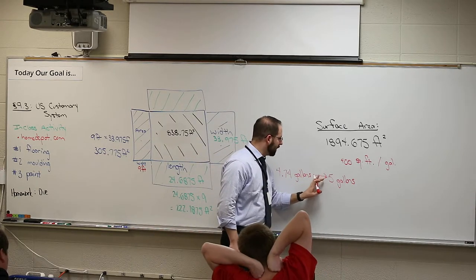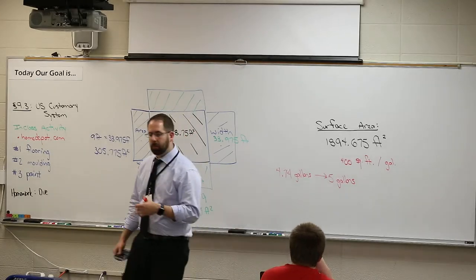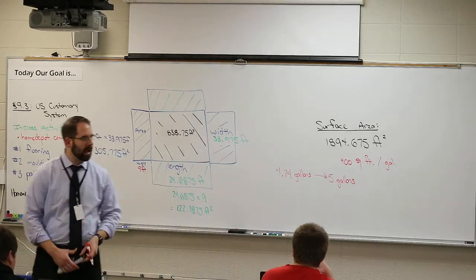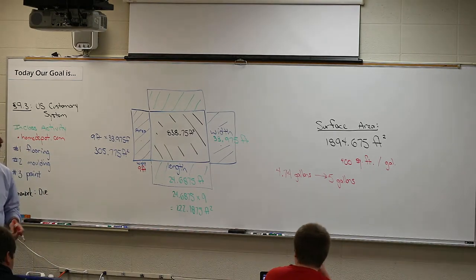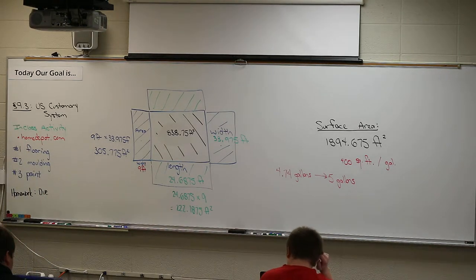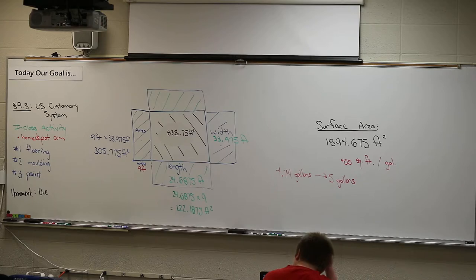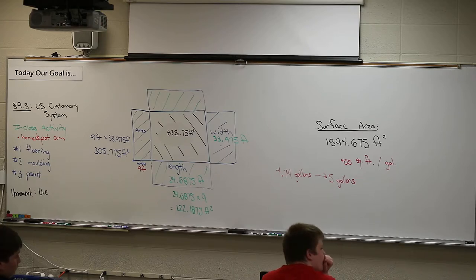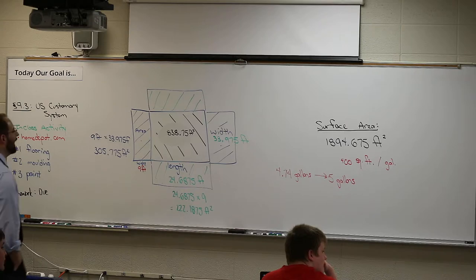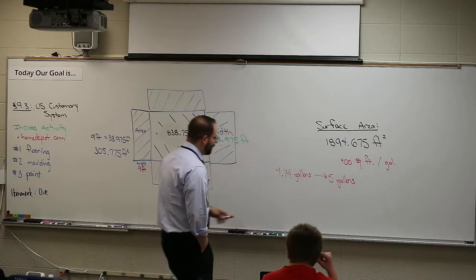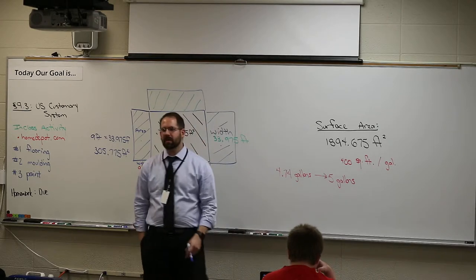It was actually 4.74 gallons, so you always round up when you have a decimal. Buy 5 gallons — it's better to have a little bit extra so you don't have to go back to the store and have them remake the paint. They're getting really good at matching paint color nowadays, especially with the old stuff, but it's always nice to have extra for finishing touches.